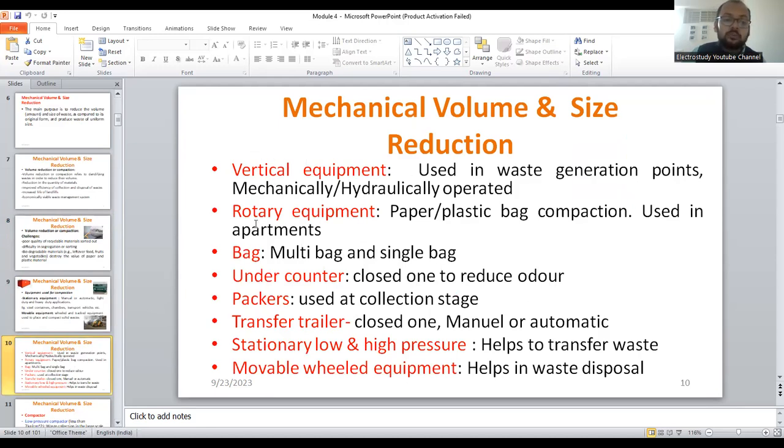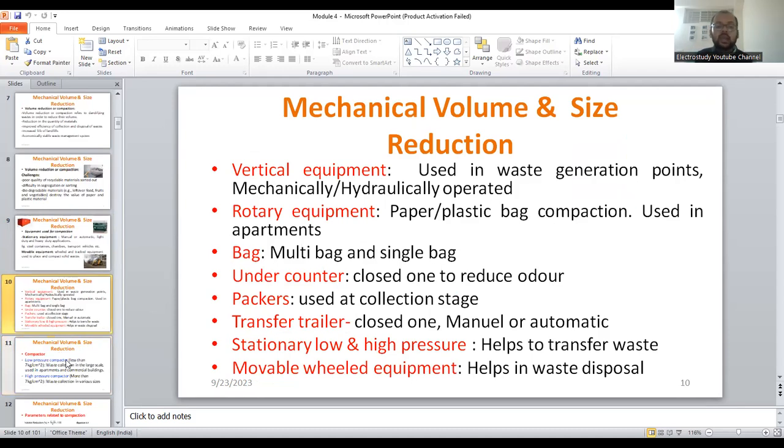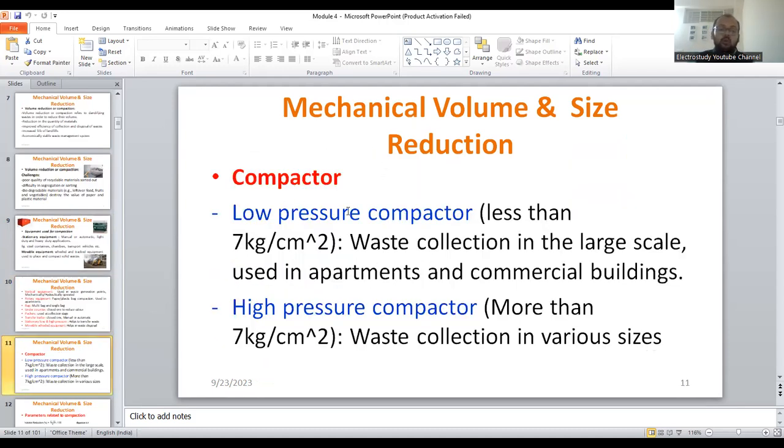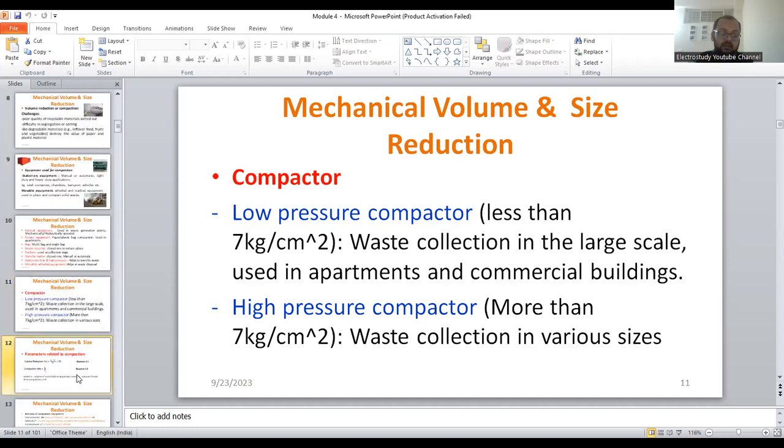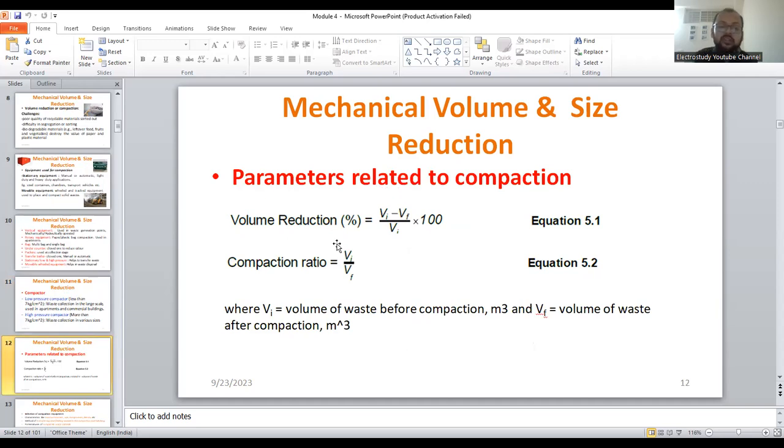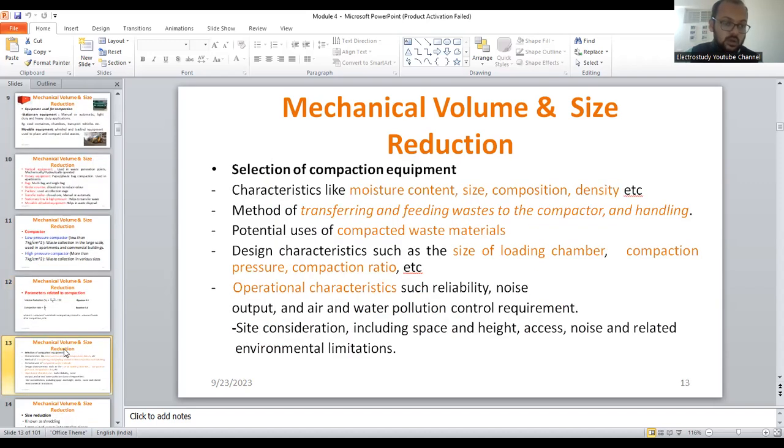Then we can have various equipments of volume reduction such as stationary equipment, then movable equipment. Apart from that, you can see the various equipments like vertical equipment, rotary equipment, bag, under counter, tackles, transfer trailer, then stationary low and high pressure devices, movable wheel equipment. These are the different types of devices which will be supported for mechanical volume reduction. Another one is called compactor. There are two types: low pressure compactor as well as high pressure compactor. It depends based on the pressure, also the particular area where you want to have waste reduction. Similarly, you can mention about the parameter. How do you evaluate the volume reduction and the compaction ratio? If possible, you write the mathematical equation like Vi minus Vf divided by Vi into 100, where Vi is the volume of waste before compaction, where Vf is the volume of waste after compaction. Volume reduction should be as minimum as possible.